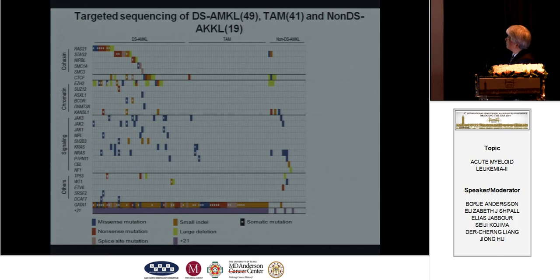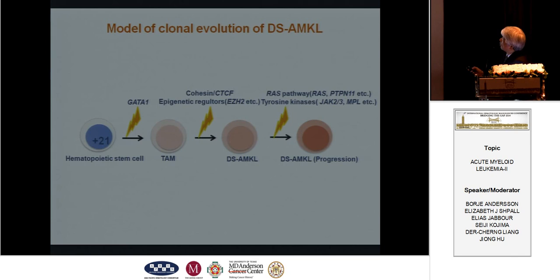This is a model of clonal evolution of Down AMKL. TAM may be caused by a single mutation of GATA1 on the hematopoietic stem cell with Trisomy 21. Cohesin, CTCF, and epigenetic regulator mutations may lead to Down AMKL. And additional RAS pathway and tyrosine kinase mutations may contribute to progression of the AMKL.